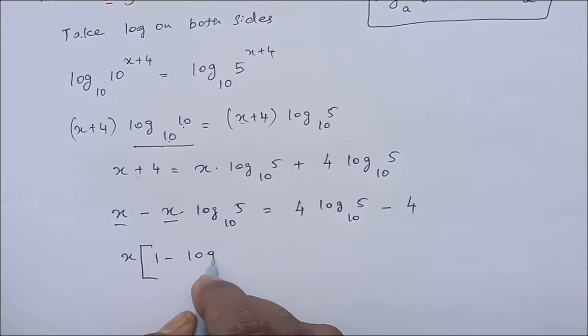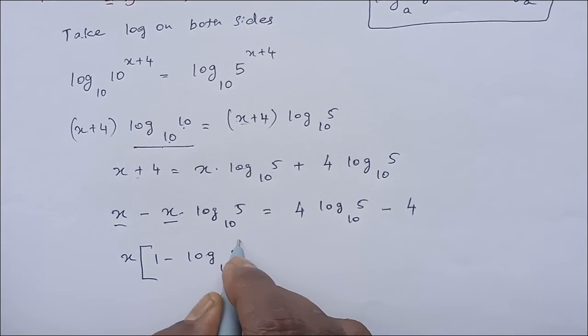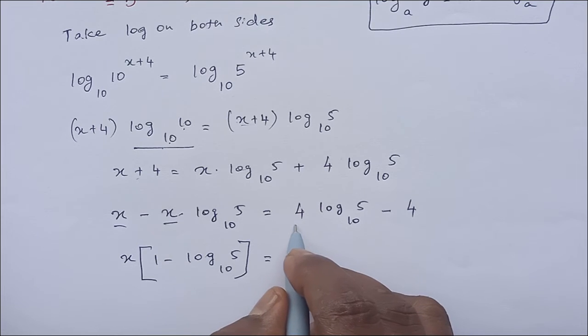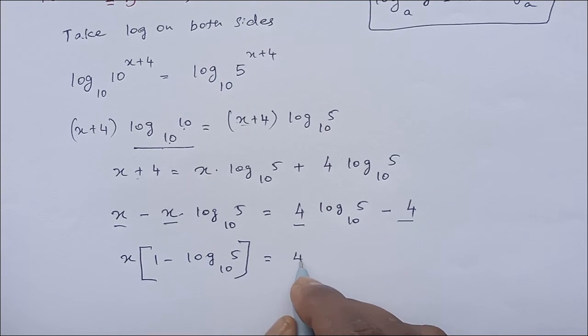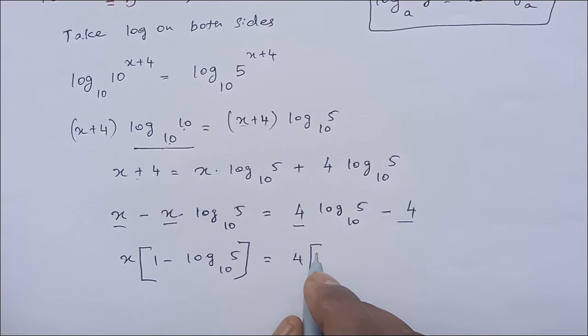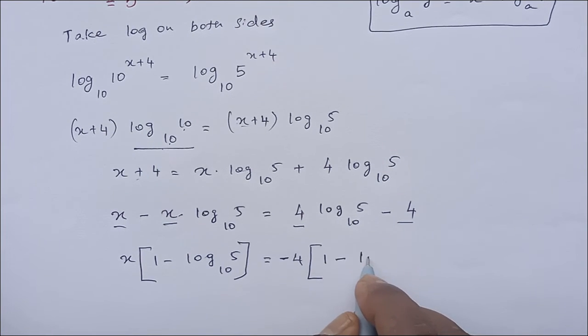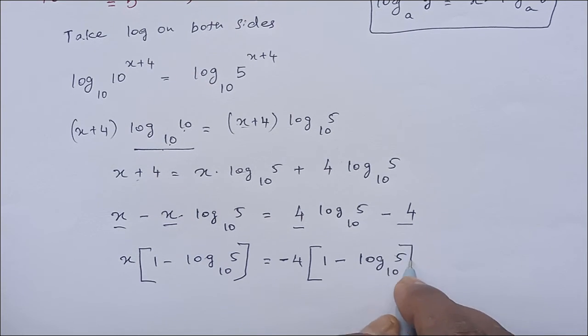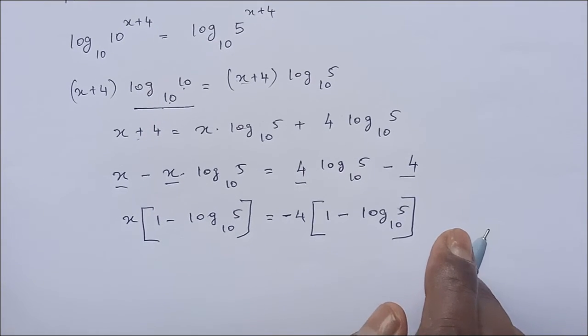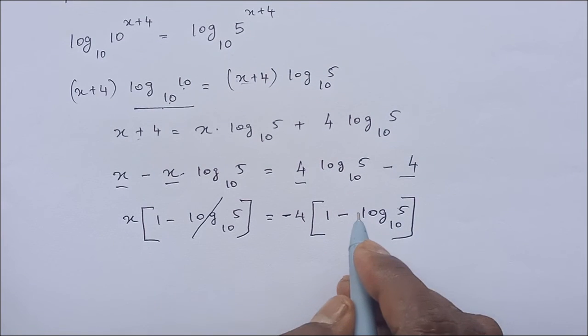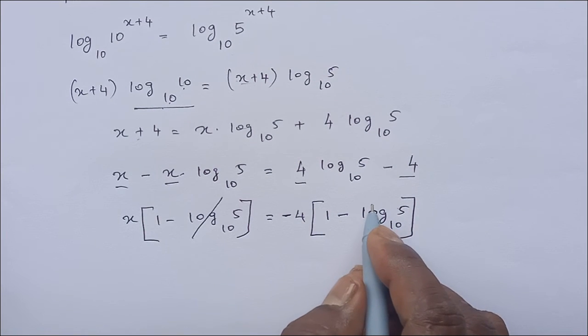Right hand side, 4 is common, so take that 4 outside: 1 minus log 5 to the base 10. So both sides, 1 minus log 5 to the base 10